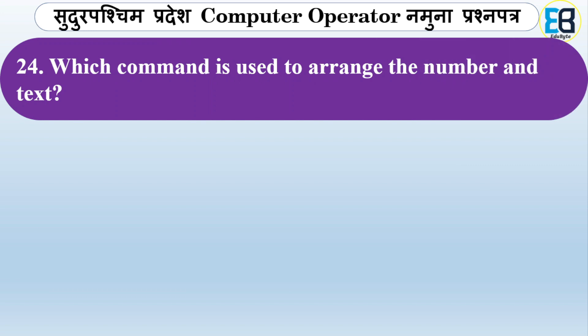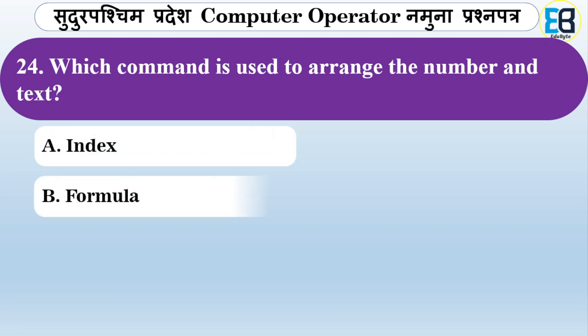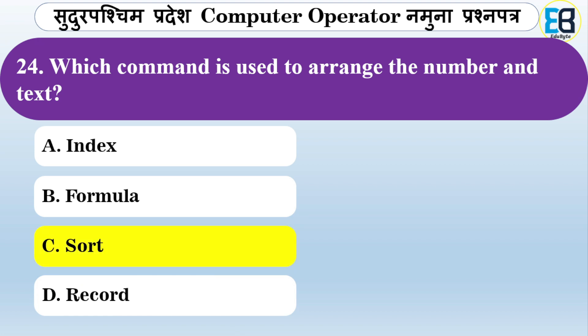Which command is used to arrange numbers and text? Options are Index, Formula, Sort, or Record. The correct answer is Sort — the Sort command is used to arrange numbers and text in order.